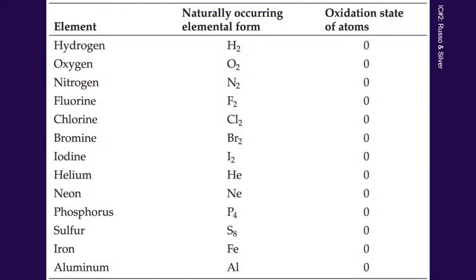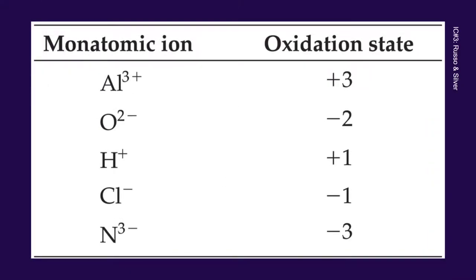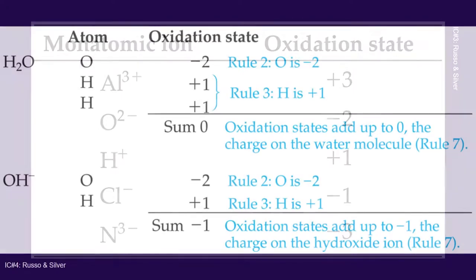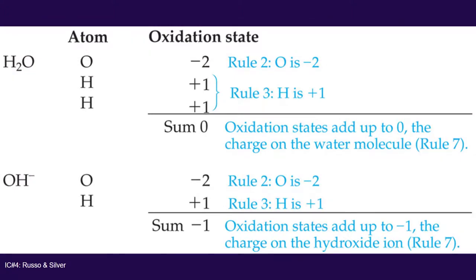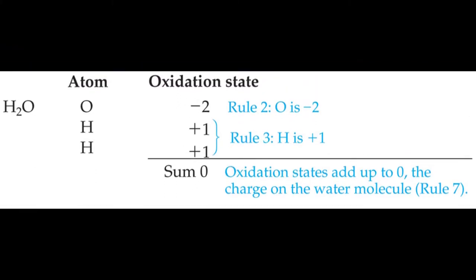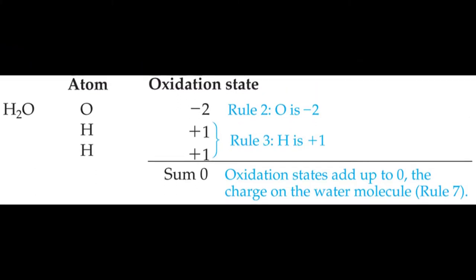First rule: if you have a pure element in its natural form, the oxidation state is going to be 0. It doesn't matter if it's a diatomic element, a monatomic element, or even one of the unusual ones like phosphorus or sulfur — in their pure form, their oxidation states are 0. The oxidation state of an ion is the charge on the ion, so the aluminum ion has a plus 3 oxidation state. Oxygen is almost always negative 2. Water is a neutral molecule, so the negative 2 from oxygen plus the two positive 1s from hydrogen gives a sum of 0.